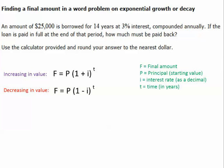So, first thing I want to do is let's look at the formulas we're going to be using today and what our different variables represent. We're dealing with exponential growth, and we have two different equations that we might use. We might have an equation where our value is increasing over time. If so, we're going to use the formula F = P(1 + i)^t. And what do all the variables stand for? F is our final amount, that's what we're trying to get to. P is our principal or our starting value. i is our interest rate as a decimal. And t is our time in years.